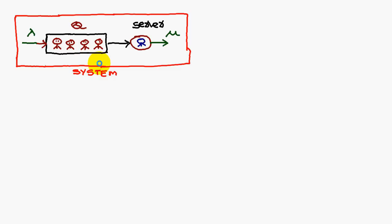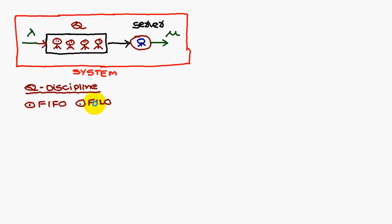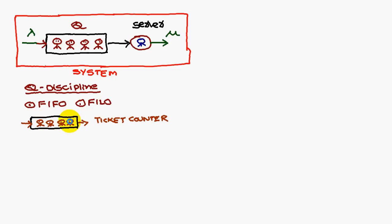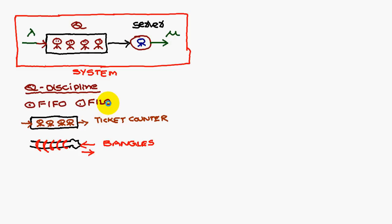Next, we come across queue discipline. In queue discipline you have first-in-first-out (FIFO) and first-in-last-out (FILO). For example, at a railway station ticket counter queue, the first person who enters the queue will get the ticket and come out first. That is called first-in-first-out — the person who enters first will come out first.